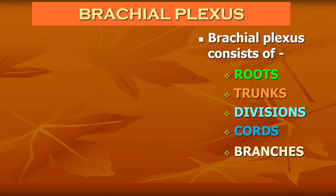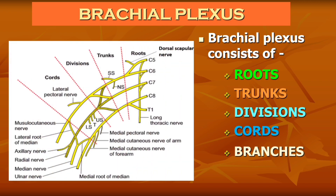The roots of the brachial plexus are formed from the ventral rami of C5 to T1 spinal nerves. These roots unite to form the trunks. C5 and C6 roots unite to form the upper trunk, C7 root continues as the middle trunk, and C8 and T1 roots unite to form the lower trunk. The upper, middle, and lower trunks are also referred to as the superior, middle, and inferior trunks.